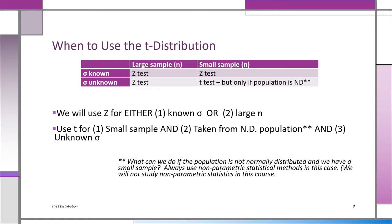Of all four cells in the table, the only problematic one is where sigma is unknown and the sample size is small — that's when we want to use the t-test. But remember, we're making a big assumption when we use the t-test: we're assuming that the underlying population is normally distributed. If we can't make that assumption, we can't use z or t, and we have to take an advanced statistics course to learn about distribution-free statistical methods.